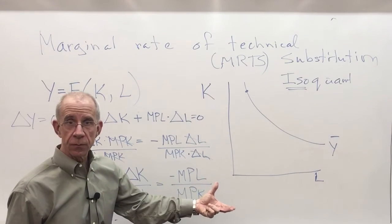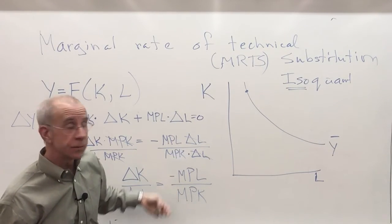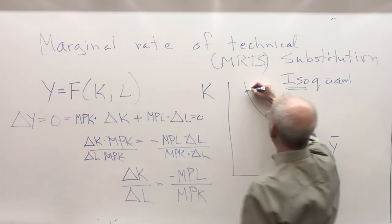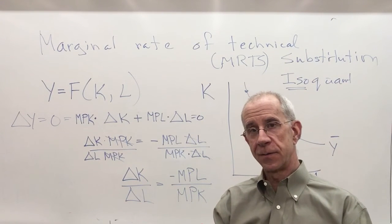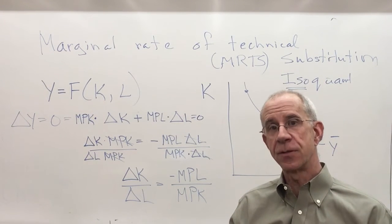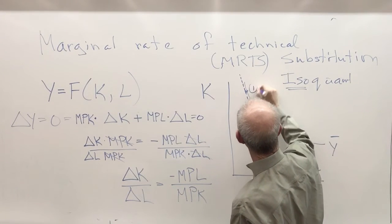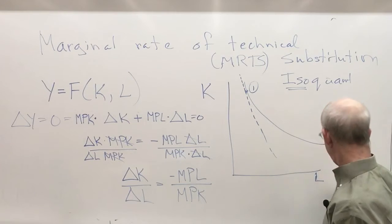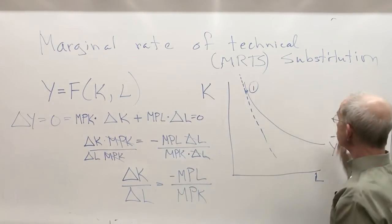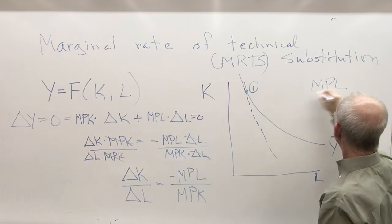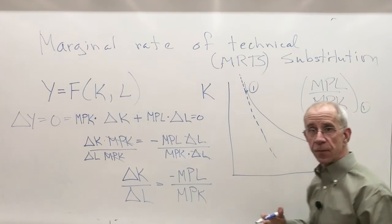So we've got along an isoquant that the slope is equal to this. If you recall, the slope of a curve is the slope of a line drawn tangent to that curve. So at point one, we've got a marginal productivity of labor over a marginal productivity of capital at that first combination.